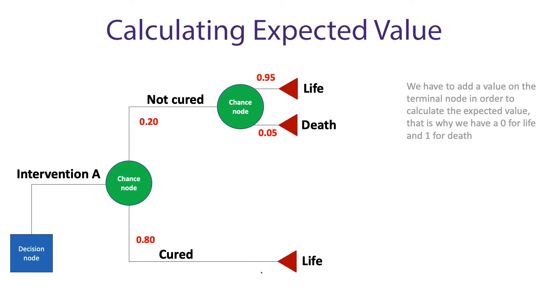Let's walk through a simple example. Step one: we put the values at our terminal nodes, where we have zero for life and one for death.